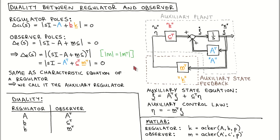What is the significance of all this? We have found the auxiliary regulator, which has the same closed loop poles as the observer. We can now apply all the design procedures and results we have derived for the regulator to the auxiliary regulator, in effect applying them to the observer.